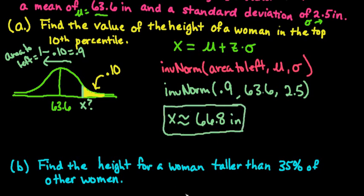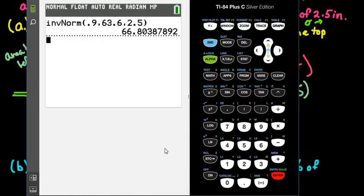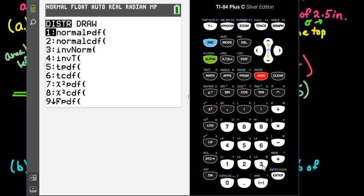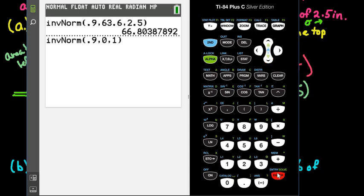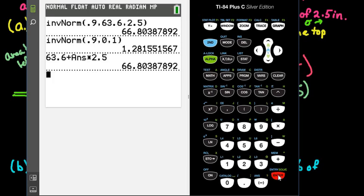Had we done this using this formula here, just to show you that I would have got the same thing, if I go back to my second distributions, option 3, I would have first found the z-score. So this is if you have to find the z-score first, you would use the z-score, and then we would use our formula where we type in the mean, which was 63.6, plus our answer, and I'm just going to hit second answer, times the standard deviation of 2.5. And we end up with 66.8 inches. So notice we got the exact same thing.